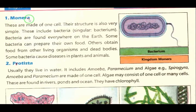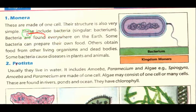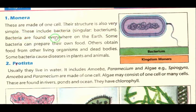The first kingdom is Kingdom Monera. These are made of one cell. Their structure is also very simple. They are the earliest and most basic living things — yaw silna judi. The bacteria found in Monera lack a true nucleus; they have only a cell wall, cytoplasm, and no separate nucleus. These include bacteria. Bacteria are found everywhere on the earth. Some bacteria can prepare their own food.